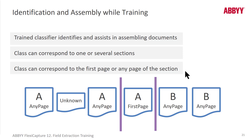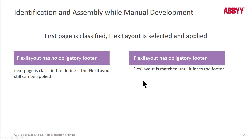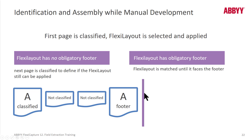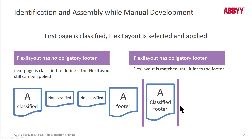When assembling documents, you can define classes as being for first page or any page. When a first page is encountered, that triggers separation. You can also classify whenever a footer is encountered — that's when separation occurs. If a FlexiLayout has no obligatory footer, the next page is classified to determine if the FlexiLayout can still be applied. But if it has an obligatory footer, the FlexiLayout is matched until it finds that footer.